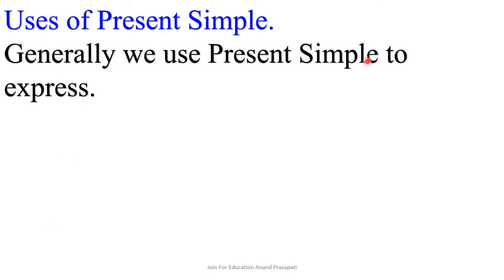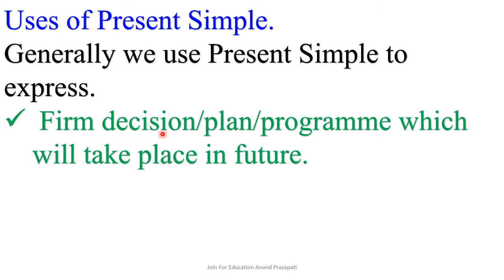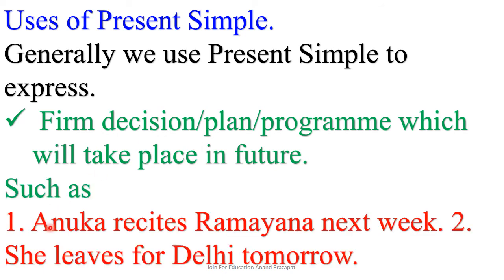Generally, we use present simple to express a firm decision, plan, or program which will take place in the future. For example, 'Anuka recites Ramayana next week.' At the present time, Anuka is not reciting the Ramayana, but in the coming days or next week she will. So it is a kind of firm decision or plan for the future, and simple present is used. Similarly, 'She leaves for Delhi tomorrow' is also a pre-planned decision, therefore simple present is used.